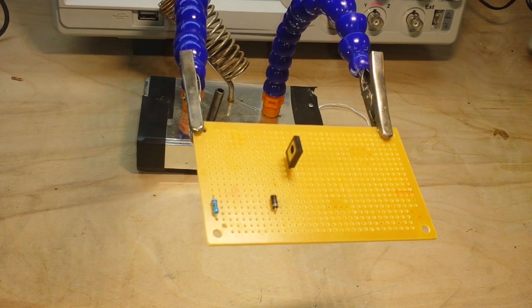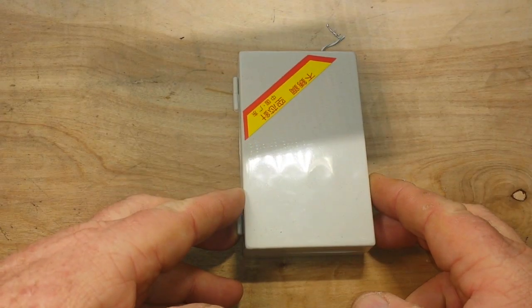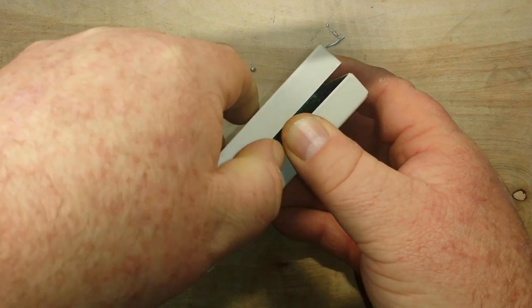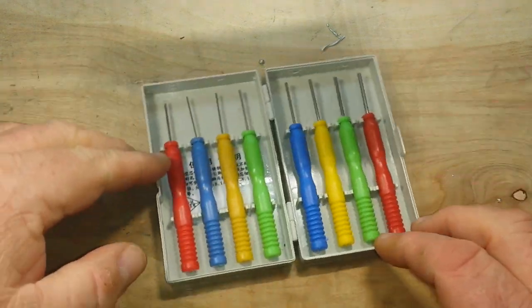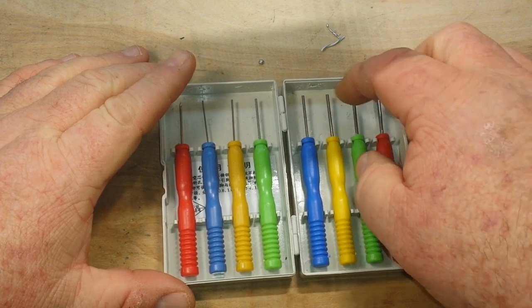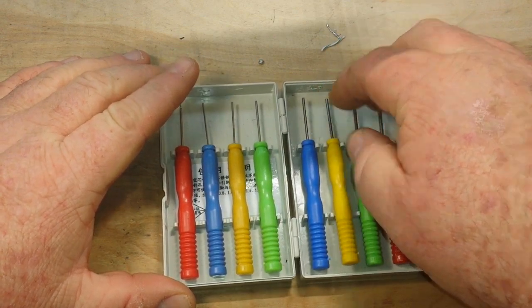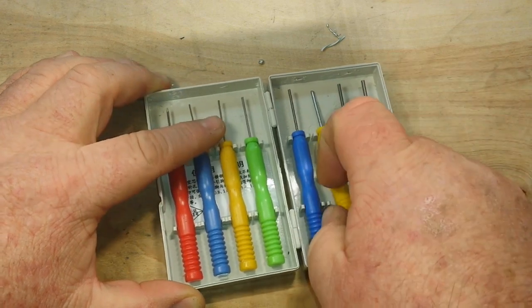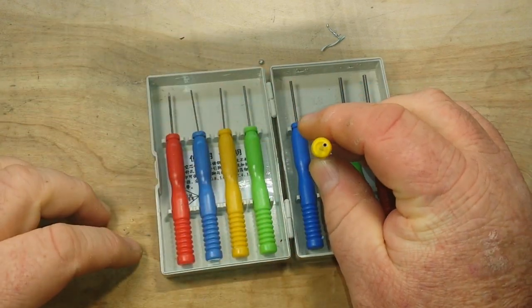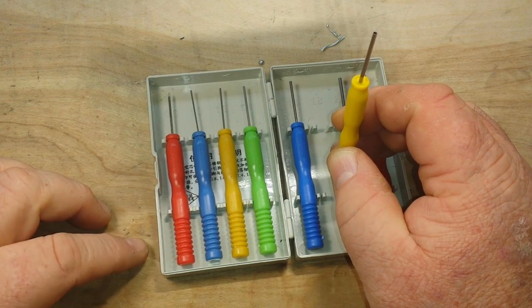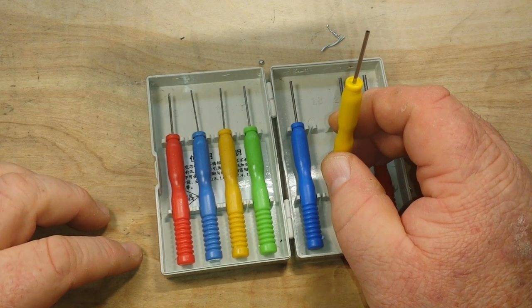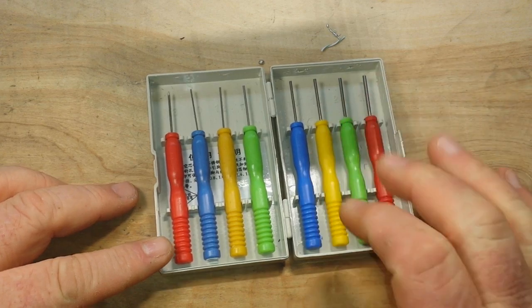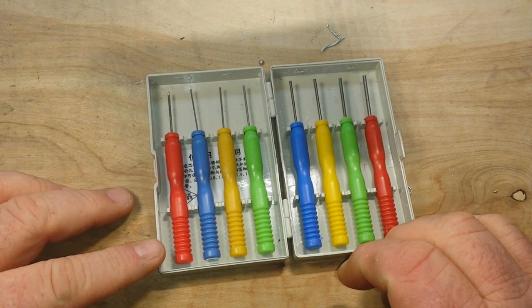You ready to see it? All right, here it is. These are hollow desoldering needles. You can see there they are empty and they work wonderfully. I wish they had had these available when I was in the Navy, but they didn't.